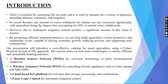This presentation will introduce a cost-effective solution for smart agriculture using a cyber-physical system (CPS) approach. The system relies on four main technologies: a wireless sensors network (WSN) for real-time monitoring of plant environmental conditions; a wireless actuators network (WAN) for controlling electric appliances such as water pumps and light bulbs; a cloud-based IoT platform for real-time data storage, processing and visualization; and a fuzzy logic control for automated irrigation control.